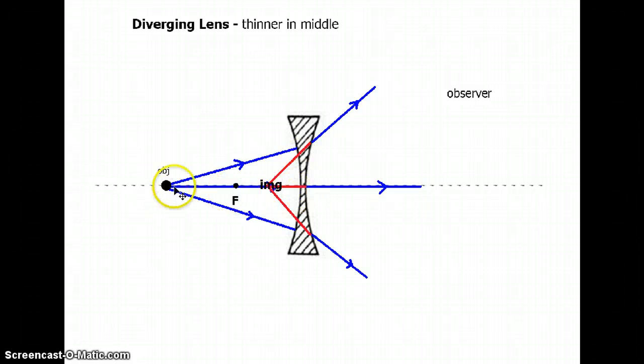So as the object moves in toward the, sorry, lens, as the object moves into the lens the image moves into the lens, and where does it end? Well eventually the object and image merge here, so instead of having plain mirror behavior, what you have is pane of glass behavior.